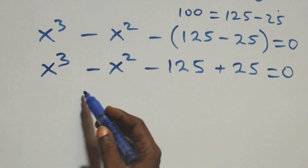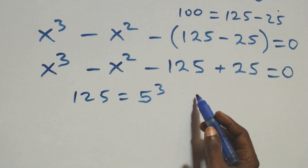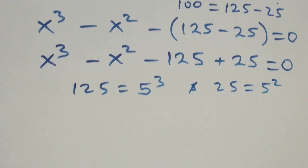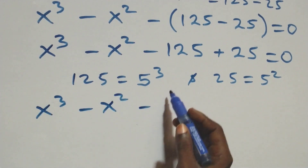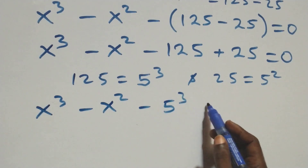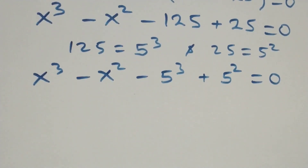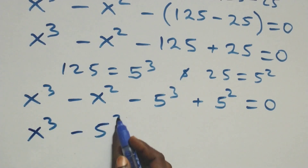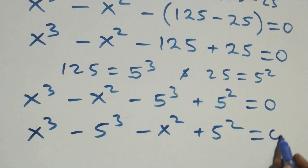Which implies here we can write 125 as 5 times 5 times 5, which is 5 cube, and also 25 as 5 times 5, which is 5 square. So what we have becomes x cube minus x square minus 5 cube plus 5 square equals to 0. Then the next step, we bring the cube terms together and the square terms together.